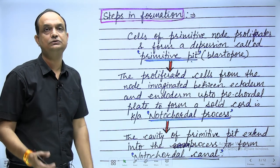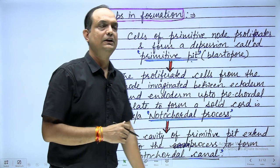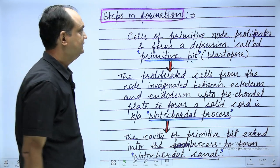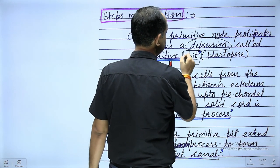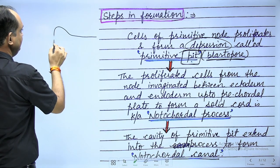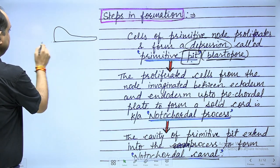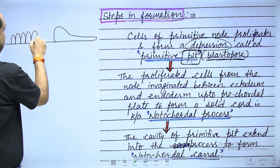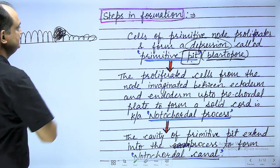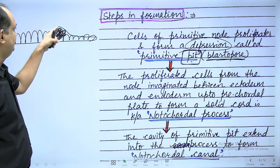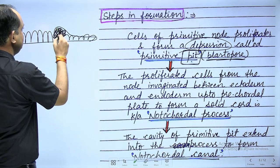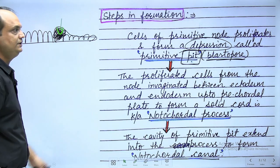Now, how does the notochordal process form? In step one, once the primitive node forms, a depression appears in it. This depression is known as the primitive pit or blastopore. The primitive streak lies in the epiblast cell layer, with large columnar epiblast cells concentrated at the node head, and a small depression — the primitive pit — appears there.